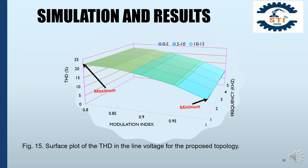Figure 15 also presents the surface plot of the THD in the line voltage for the proposed switching technique. From this surface plot, it is realized that the THD decreases with increasing modulation index. The lowest THD is achieved at 1 kHz and a modulation index of 1. The highest value is found at a modulation index of 0.8.